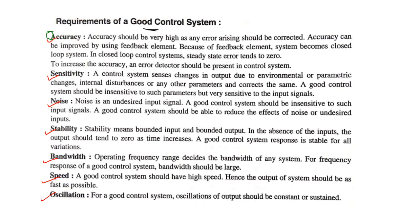Now sensitivity: a control system senses changes in output due to environmental or parametric changes, internal disturbances, or any other parameters, and corrects them. A good control system should be insensitive to such parameters but very sensitive to the input signals so that we can get the desired output. Sensitivity is another requirement of a good control system.